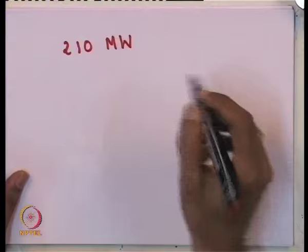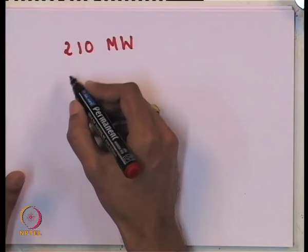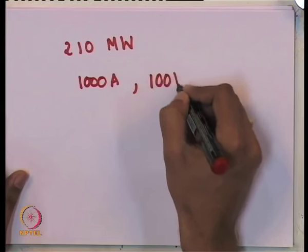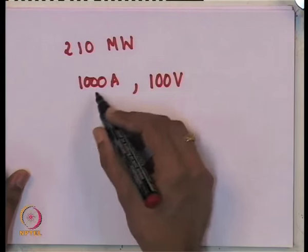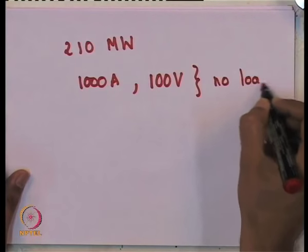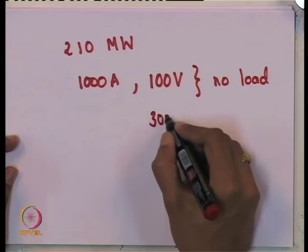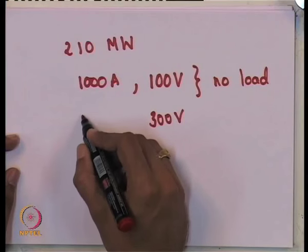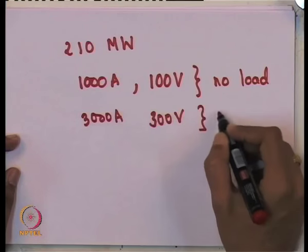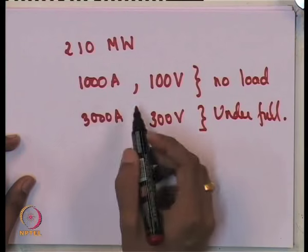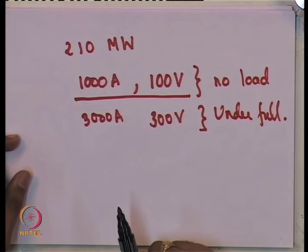For example, a typical 210 MW set under no-load conditions has excitation currents of approximately 1000 amperes and voltages of around 100 volts applied to the field winding. Under loaded conditions this may be three times as much — approximately 3000 volts and 3000 amperes. The excitation power required is not very high; under no-load conditions it is less than a megawatt.